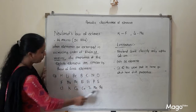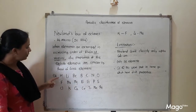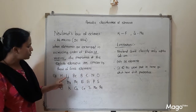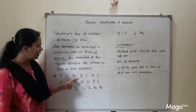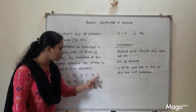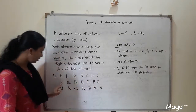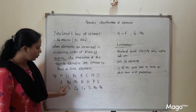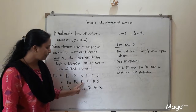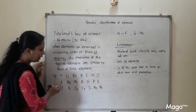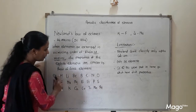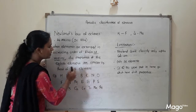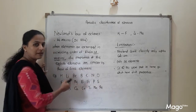I will explain with an example. The elements arranged in increasing order of atomic masses are: hydrogen, lithium, beryllium, boron, carbon, nitrogen, oxygen, then fluorine, sodium, magnesium, aluminium, and so on. Many elements are arranged in increasing order of their atomic masses.